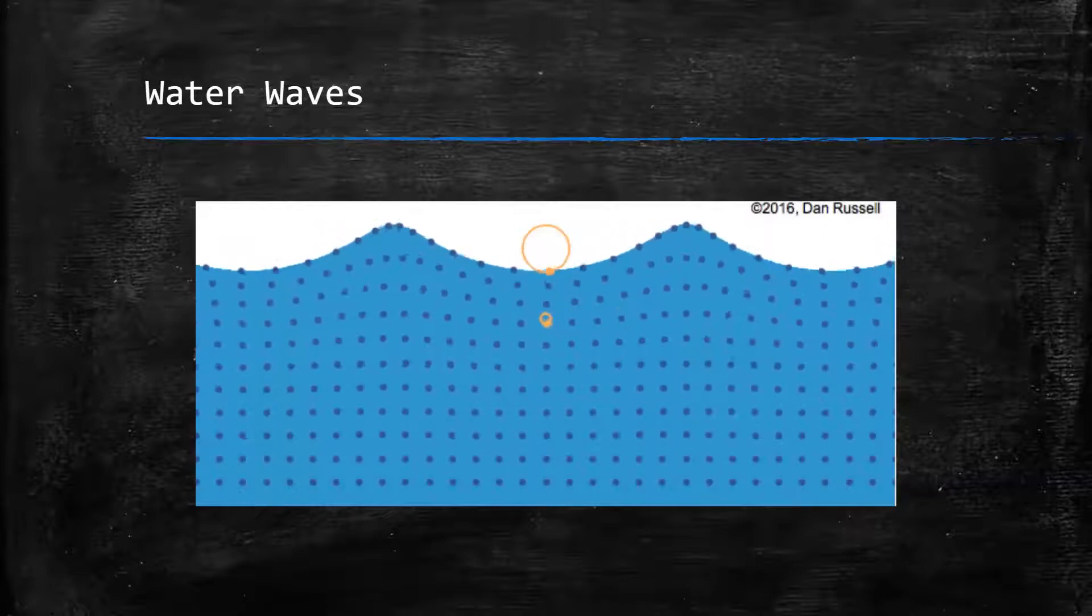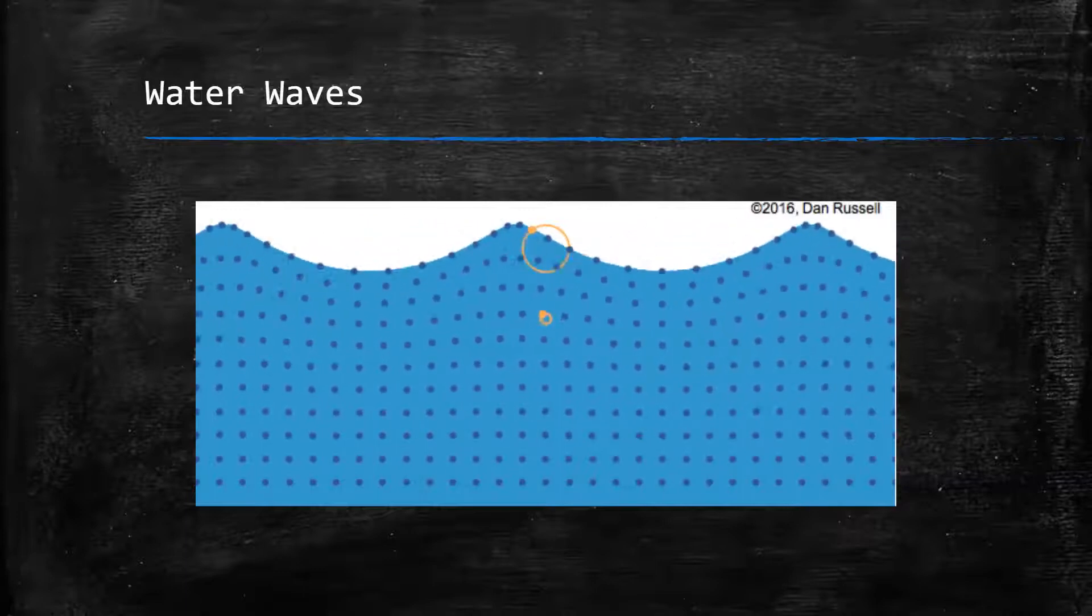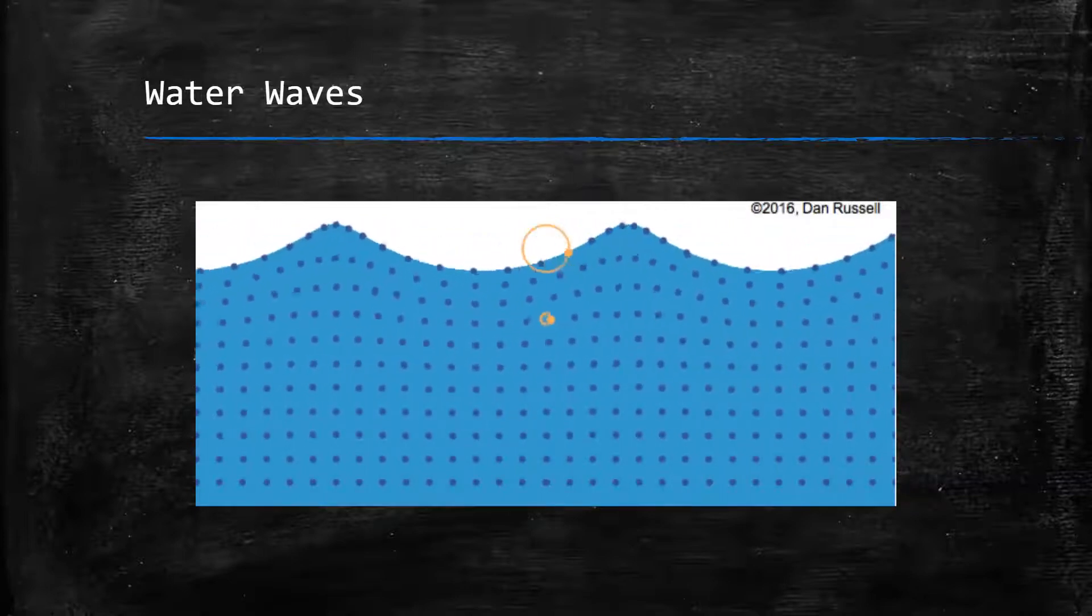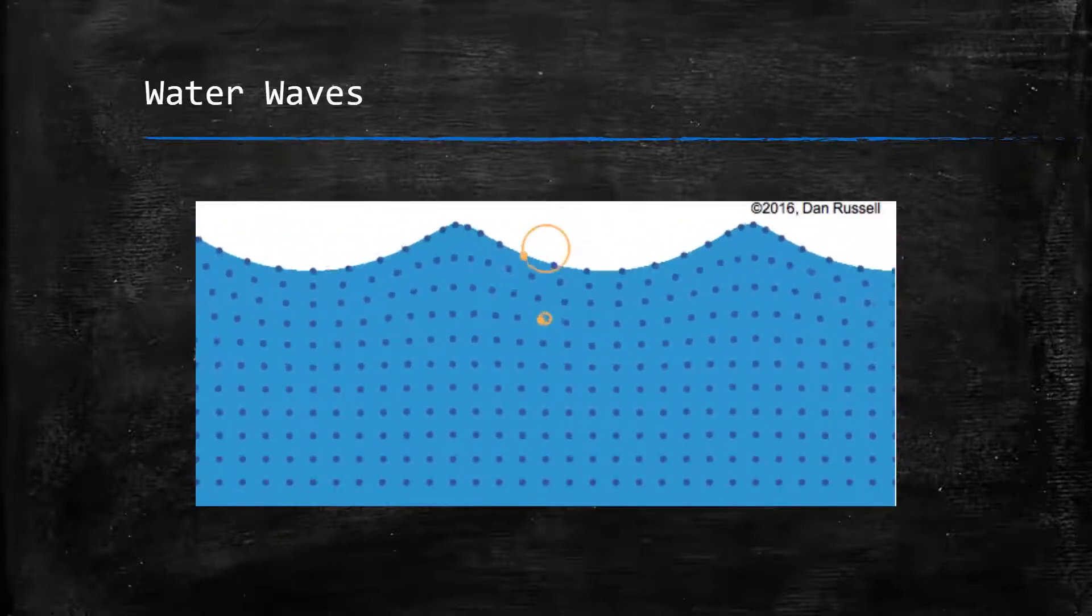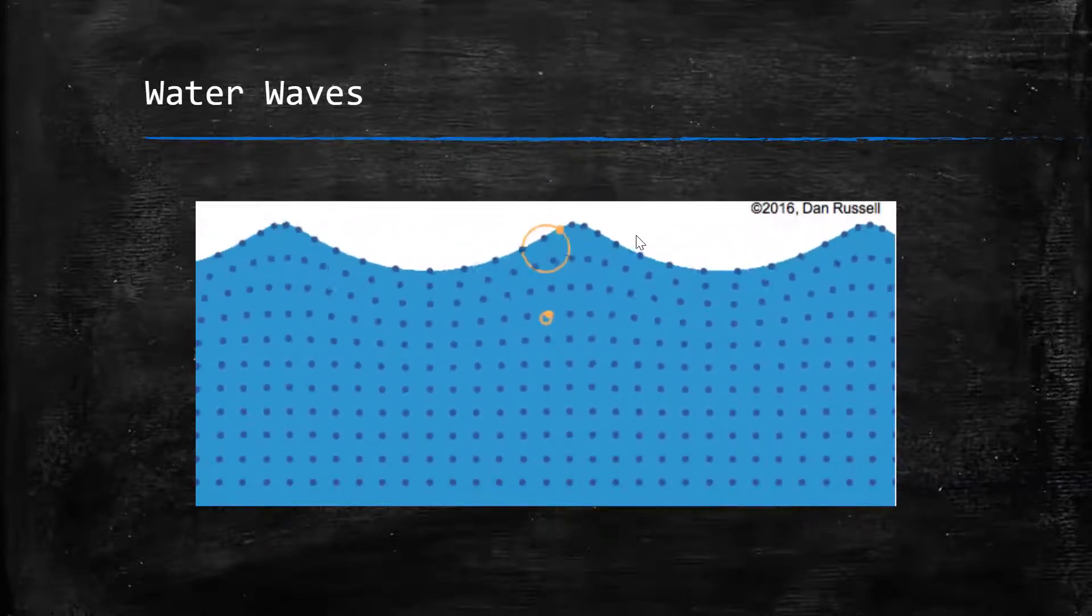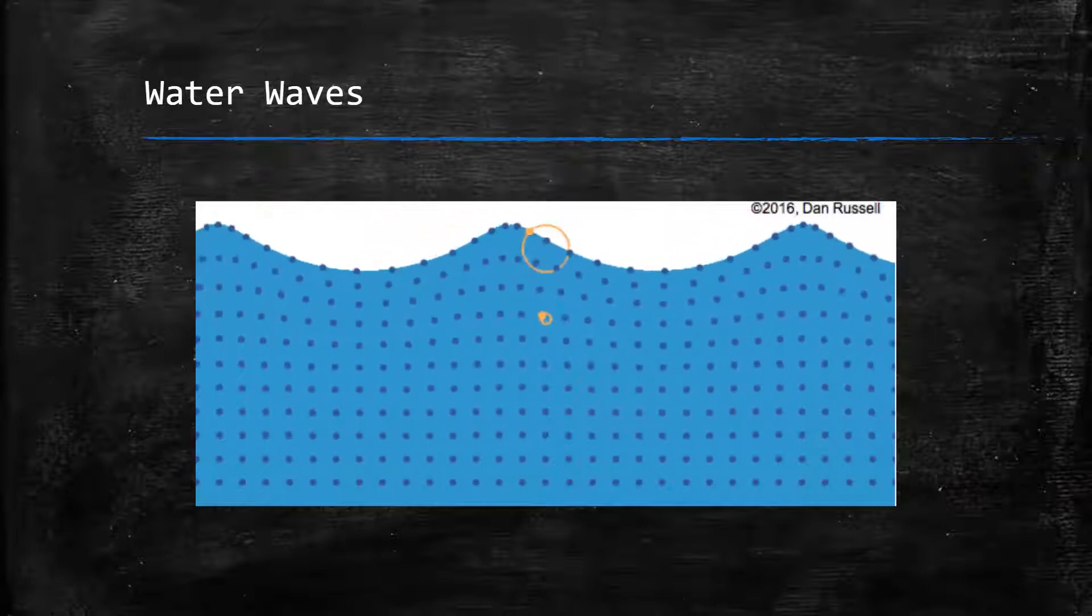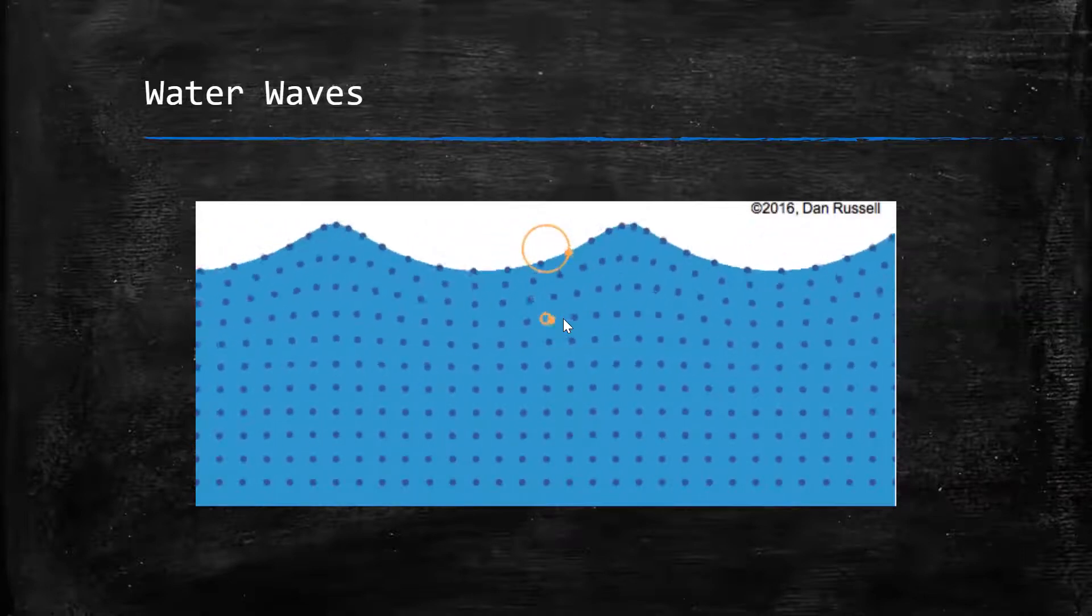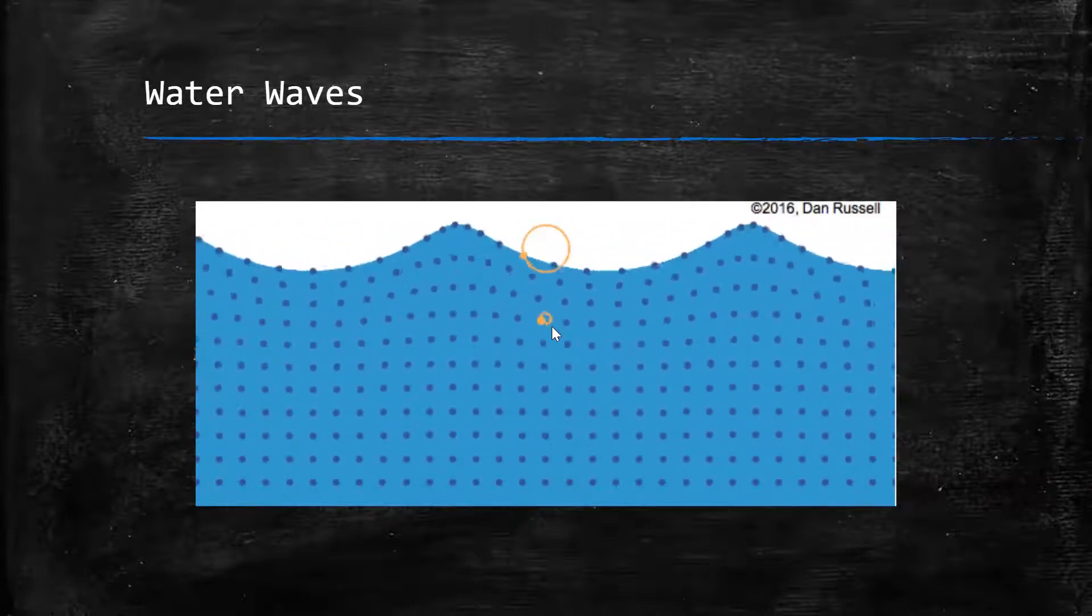Water waves are an example of waves that involve a combination of both longitudinal and transverse motions. As a wave travels through the water, the particles travel in clockwise circles. The radius of the circle decreases as the depth into the water increases. The animation at right shows a water wave traveling from left to right in a region where the depth of the water is greater than the wavelength of the waves. I have identified two particles in orange to show that each particle indeed travels in a clockwise circle as a wave passes.